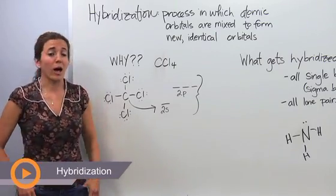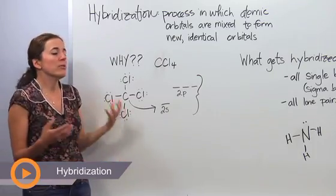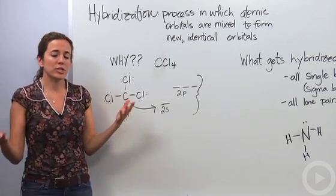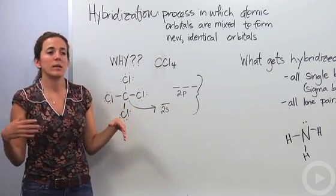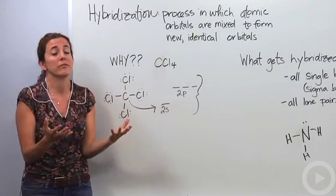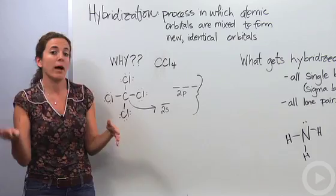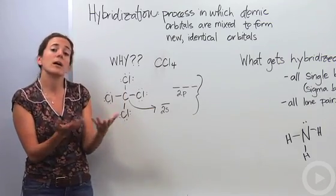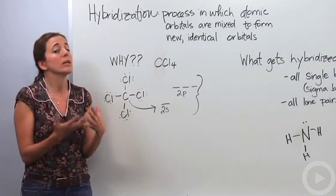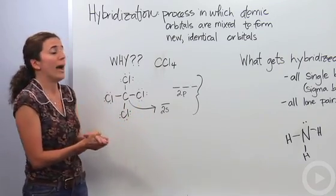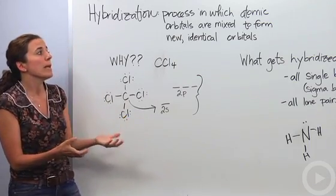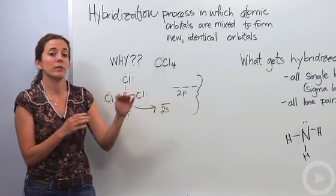We're going to talk about hybridization of atomic orbitals. Just like hybrid cars combine electric and gas to make a completely new type of car, or a mountain bike and road bike combine to form a hybrid bike, we're going to bring two different atomic orbitals together to make a completely new orbital. We call that process hybridization — a process in which atomic orbitals are mixed to form new identical orbitals that are identical in energy.